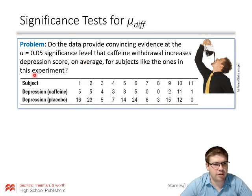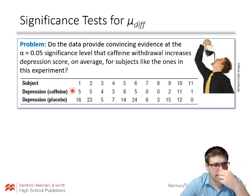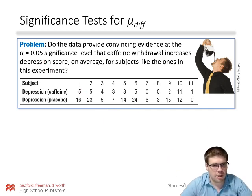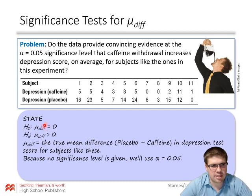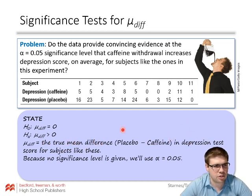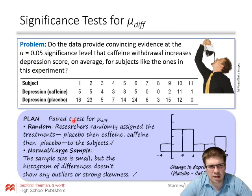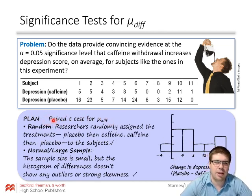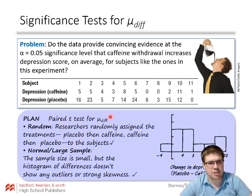We need to determine whether the data give convincing evidence at alpha 0.05. The null hypothesis is that the mean difference is zero, and the alternative is that the mean difference is greater than zero — using placebo minus caffeine — meaning depression was higher without caffeine. We're testing the true mean difference (placebo minus caffeine) in depression test score for subjects like these. You can call this a one-sample t-test for mu diff, a matched pairs t-test, or a paired t-test — they all refer to the same procedure.